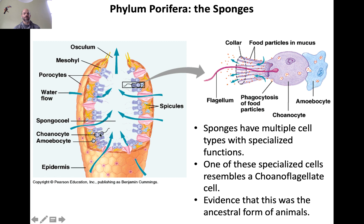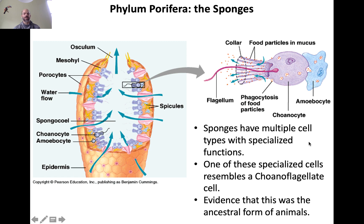Choano means collar, so both the choanoflagellate cell and the choanocyte of a sponge has this collar around the flagellum. The sponge uses the choanocytes to create a current of water that brings food into the body of the sponge. But the sponge is different from a choanoflagellate in that it has many other types of cells as well — actual differentiated tissues, each one with a specialized function. It even has an epidermis. This anatomy has been used as strong evidence that the choanoflagellates and this type of heterotrophic flagellated cell is the ancestral state of animals, and the sponge is sort of a transitional form between a single-celled choanoflagellate and a more complex animal.